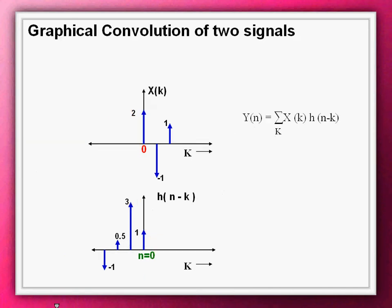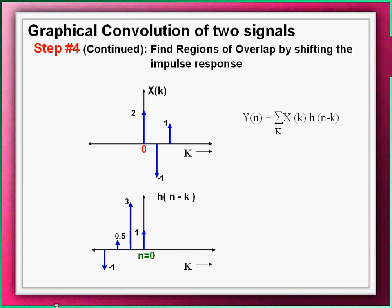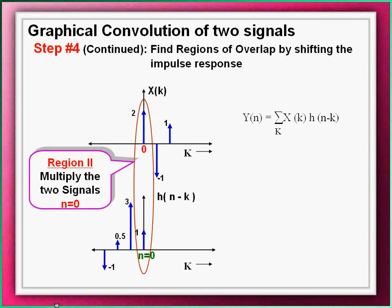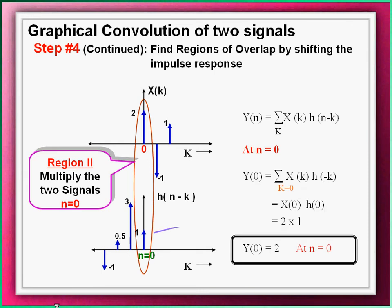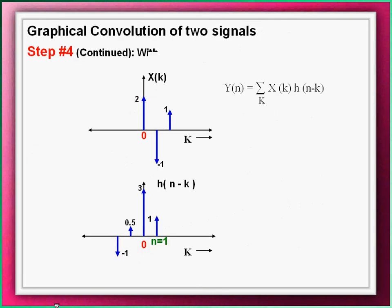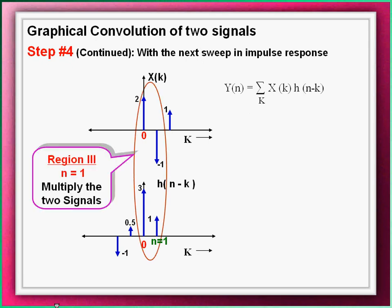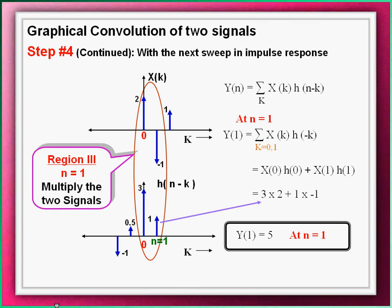Sweeping the impulse response past the input, the first overlap occurs at n equals zero. Multiplying the two signals, the convolved output in this region is two. With the next sweep of the impulse response at n equals one, the signals overlap at two time instances. Multiplying the two signals and adding up the product values, the convolved output in this region is five.